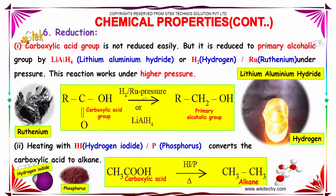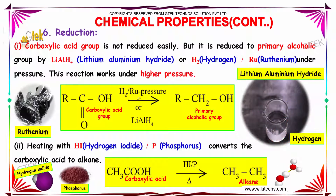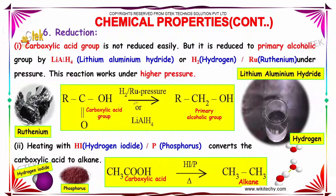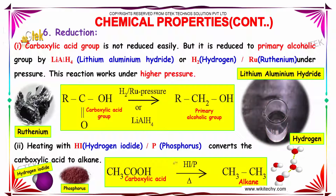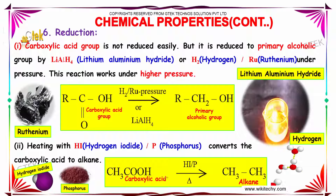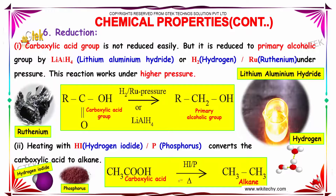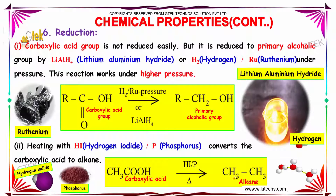Heating with hydrogen iodide and phosphorus converts carboxylic acid to alkane. In this reaction, carboxylic acid in the presence of hydrogen iodide and phosphorus on heating produces alkane.